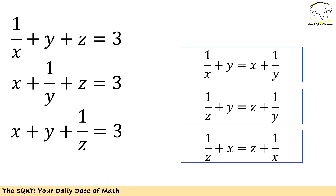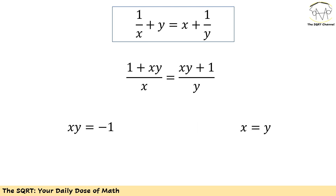For example, let's take the first two equations — z is common — and subtract one from the other. We end up with 1 over x plus y equals x plus 1 over y. You are going to see exactly the same pattern with different variables for the other equation pairs, ending up with the three equations shown on the right-hand side.